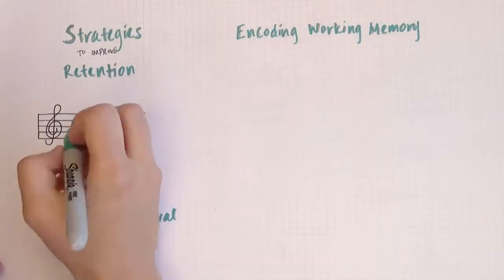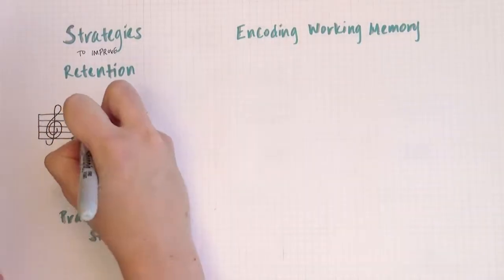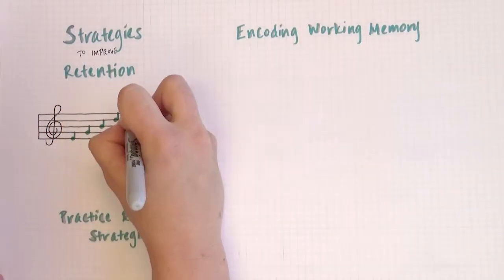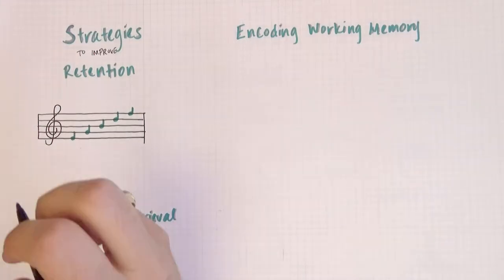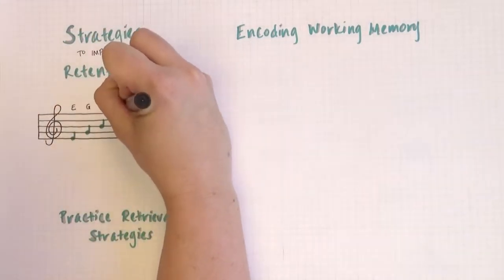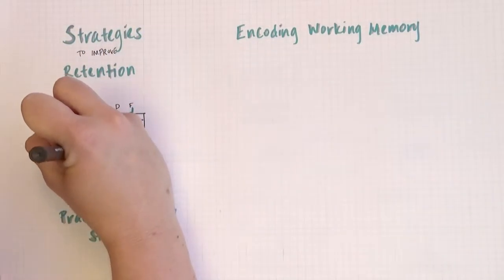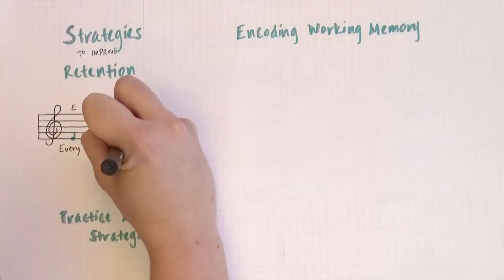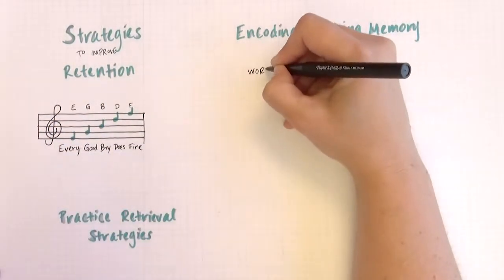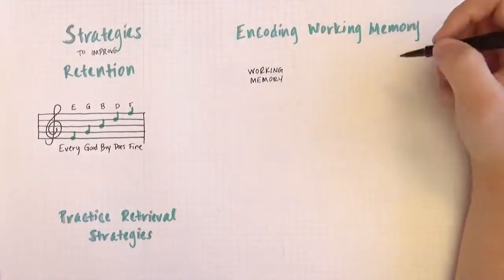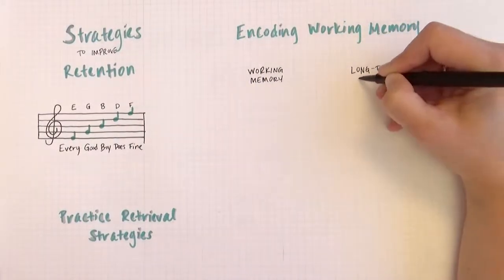Using varied rehearsal strategies is the best method. Try creating mnemonic devices such as rhymes, acronyms, or song lyrics. You can also create images to go with course content or color code information to make the connection stronger. Other examples include reviewing notes daily, testing yourself over note cards, or having someone quiz you on book questions.